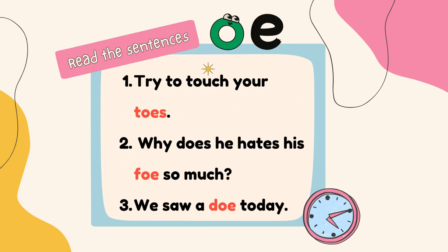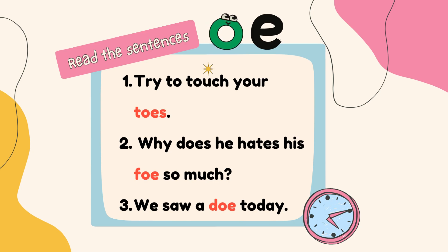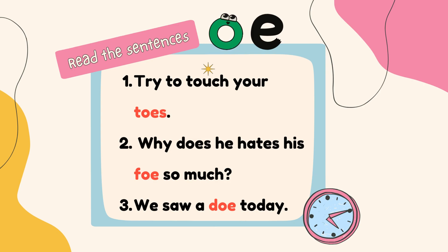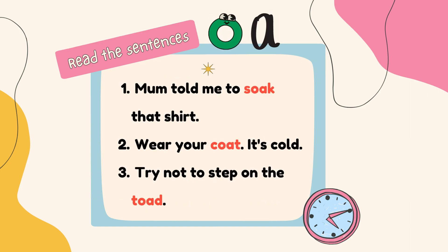Next, the O and E together, but only making the sound O. Number one: try to touch your toes. Number two: why does he hate his foe so much? — I do realize there's a mistake there; the word 'hate' shouldn't have an S, so: why does he hate his foe so much? Number three: we saw a doe today. Next, it's the O and A word, but again it only makes the sound O.